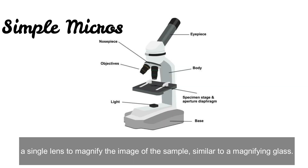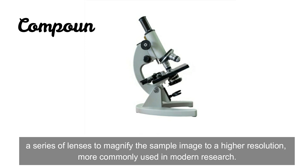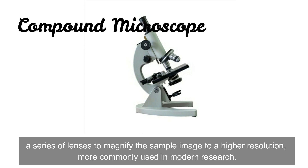A simple microscope uses a single lens to magnify the image of the sample, similar to a magnifying glass. A compound microscope uses a series of lenses to magnify the sample image to a higher resolution, and is more commonly used in modern research.